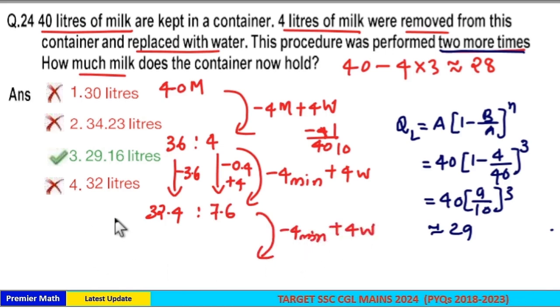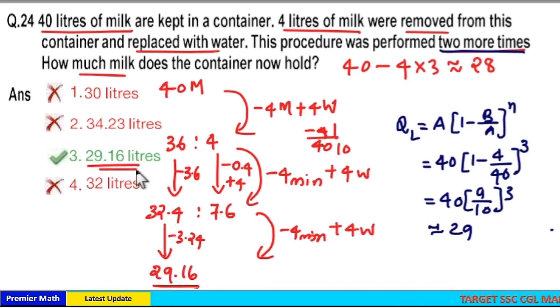40 again - that is 1/10 again. So 1/10 of 32.4 equals 3.24. When you subtract, 32.4 minus 3.24 equals 29 point something. So this is 29.16. Our answer is option 3.